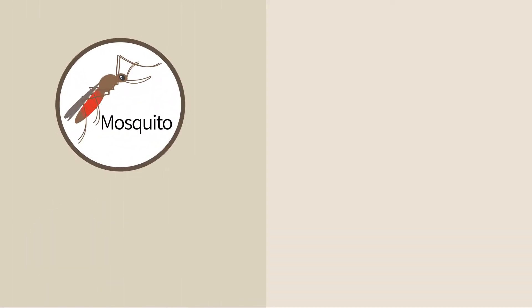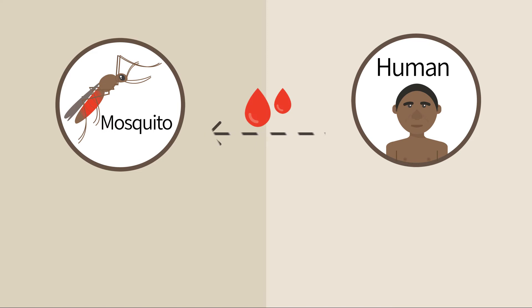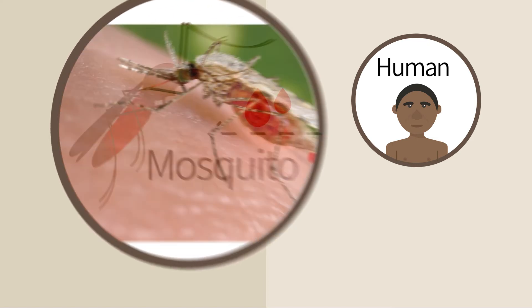The life cycle of the parasite is split between the female mosquito, where it reproduces sexually, and the human host, in whom it proliferates asexually.